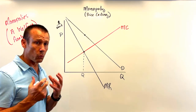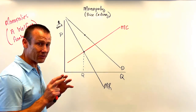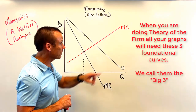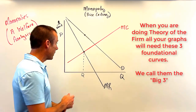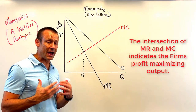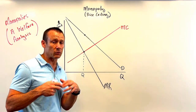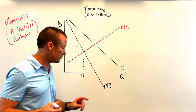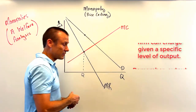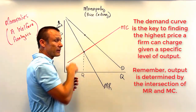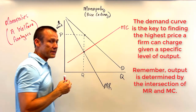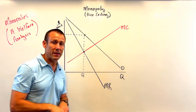Now we'll find P and Q. You need the big three curves — MC, MR, and demand. Where MC and MR intersect gives you output. Once you have output, you go find the price: what's the maximum the firm can charge to sell that exact level of output? That's given by the demand curve. Take that Q straight up to the demand curve, then draw that over — now we have our P and Q.